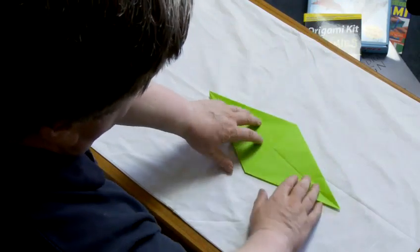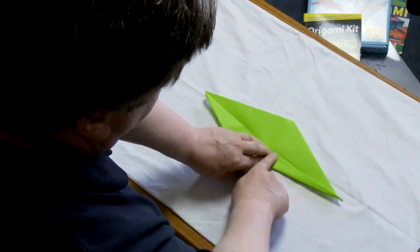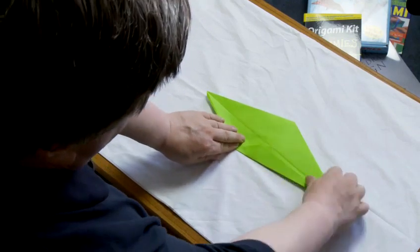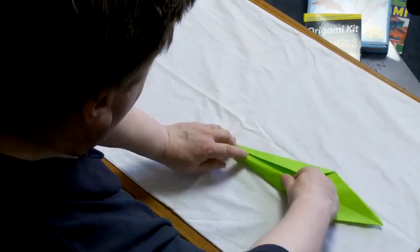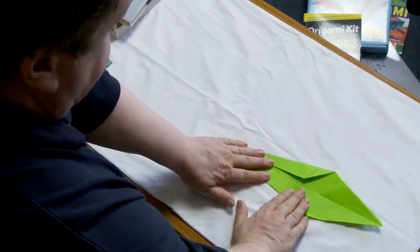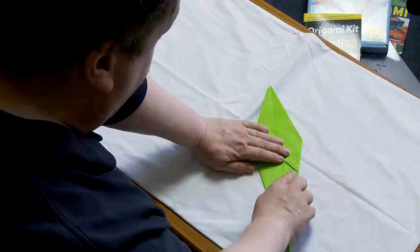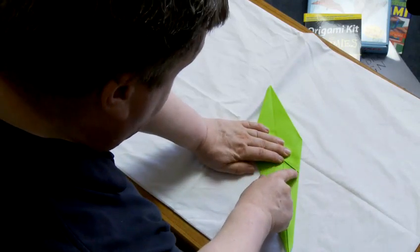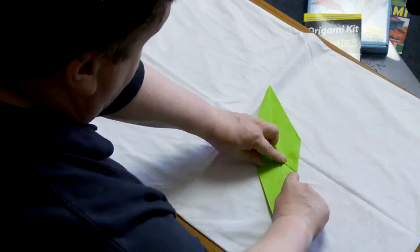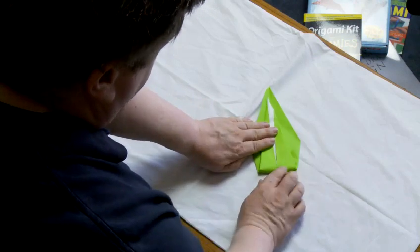That point is pointing upwards. So we want the downward bit of the model which we're going to fold almost in half. Don't go right to the crease. Just go almost in half like that. And do the same on the other side. Then we have a point here where we've got a piece of paper that wraps it around to the front. At that point we want to make a crease directly upwards like that.